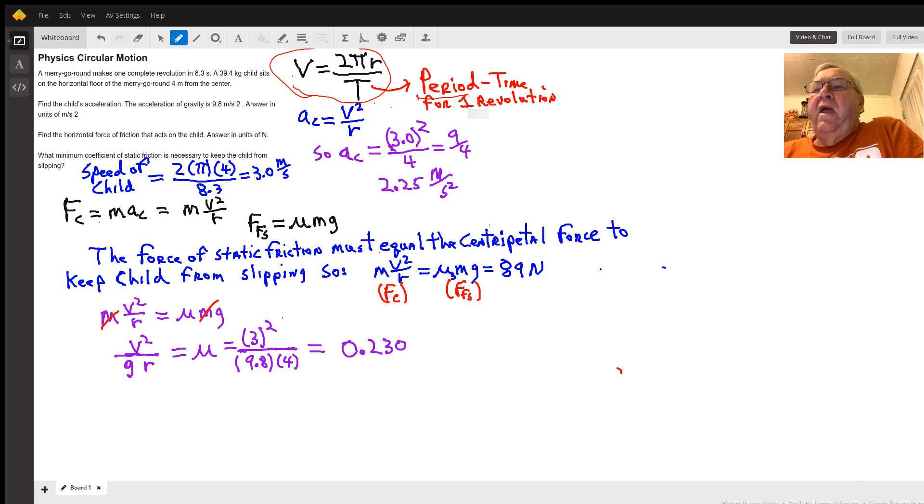Now centripetal acceleration is the speed squared divided by the radius. To get the speed, once again I'm going to use this formula for speed. So the speed of the child would be 2 times π times 4 divided by 8.3, and I came up with about 3.0 meters per second.